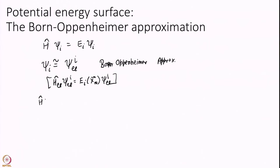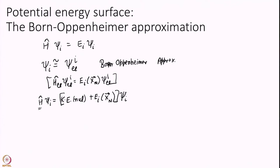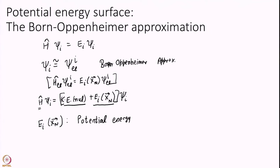This is called the Born-Oppenheimer approximation. With this, H acting on psi_i looks like nothing but kinetic energy of nucleus plus some energy which is also a function only of nuclear positions, acting on psi_i. So what is the Hamiltonian now? It is kinetic energy plus potential energy - kinetic energy of nuclei plus some energy of position. We call E_i of X_N the potential energy of nuclei.